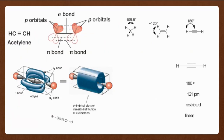Triple bonded carbons are sp-hybridized and have linear shapes with the bonded atoms at angles of 180 degrees to each other. Because of this linear shape, geometric isomerism does not occur in alkynes. Alkynes are non-polar since they contain nothing but carbon and hydrogen, so like the alkenes and alkanes they are not soluble in water and they are generally less dense than water.